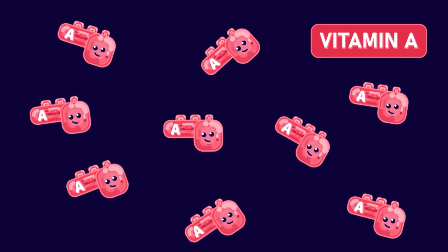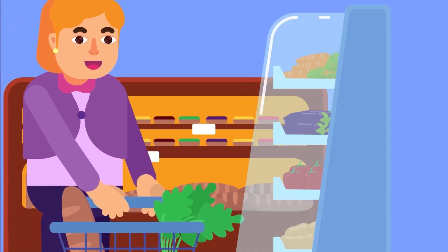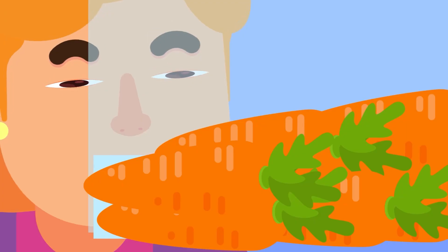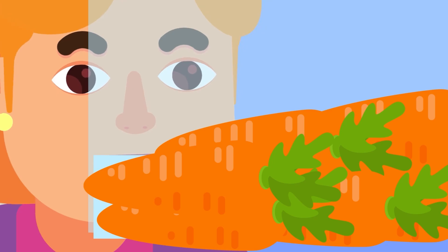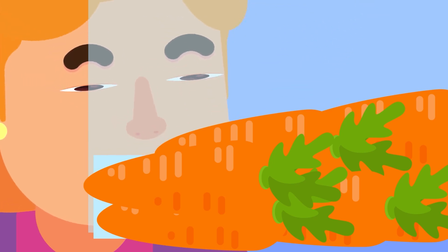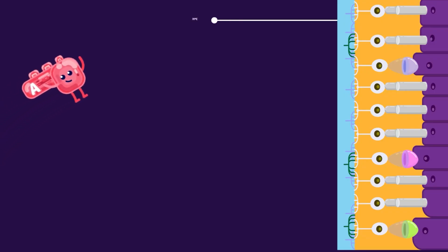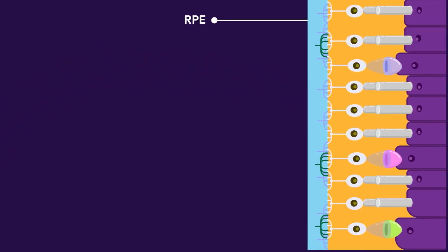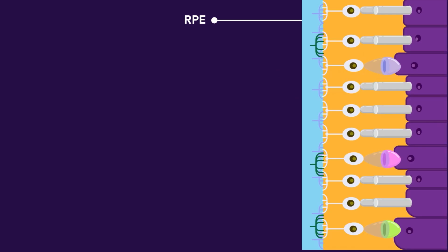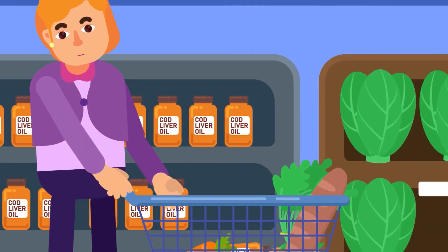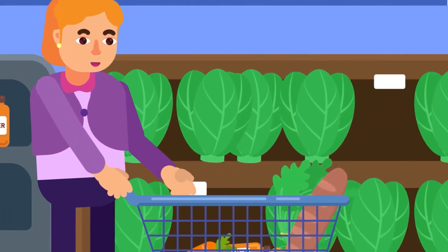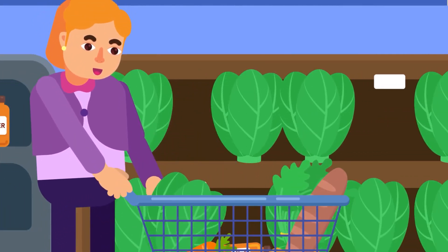Vitamin A — ever heard that carrots are good for your eyes? Carrots are a rich source of vitamin A, a fat-soluble vitamin required for the formation of a light-sensitive pigment in the retina and for maintaining healthy epithelial tissues. Rich sources include dairy products, fish liver oils and green leafy vegetables.